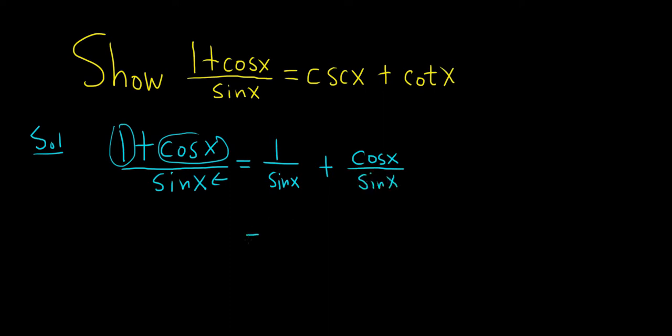1 over sine x is cosecant x. It's 1 over sine - the one that starts with the other letter but it's not cosine so it's cosecant. And then cosine over sine is cotangent x.